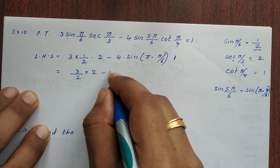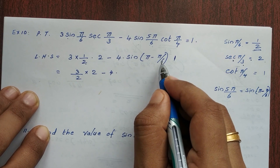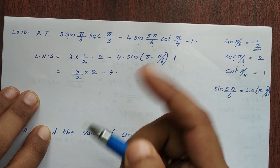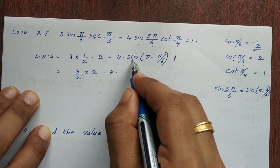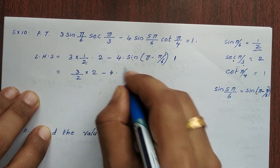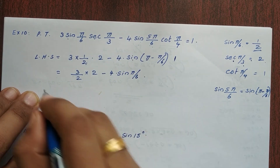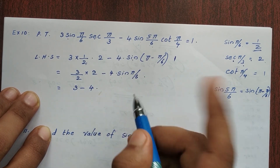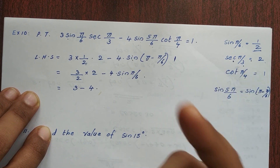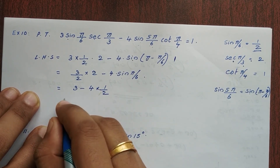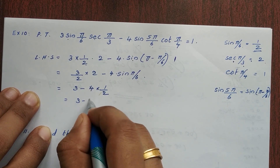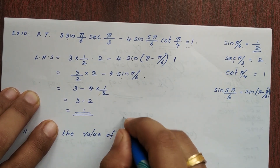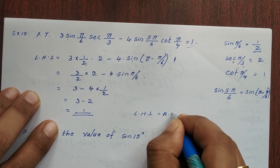Now let's get into this step. sin(π − π/6): since π minus θ is in the second quadrant, sin is positive, and sin does not change. So sin(5π/6) = sin(π/6) = 1/2. Then 3 × (1/2) × (1/2) minus 4 × (1/2) × (1/√2) simplifies — terms cancel — and the answer is 1. So LHS is equal to RHS.